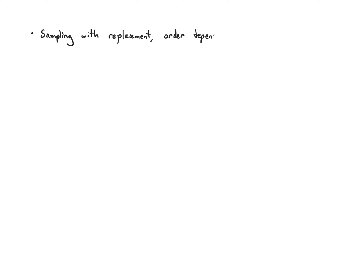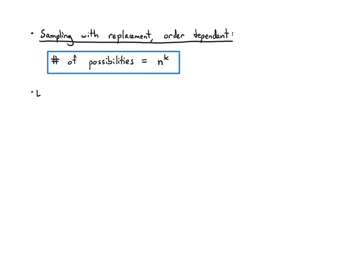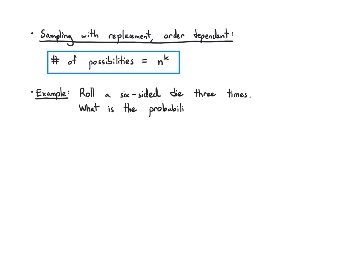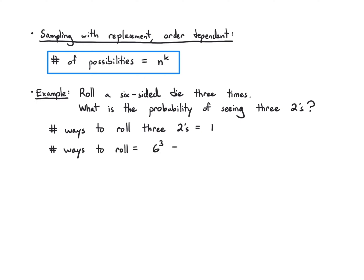For sampling with replacement, order dependent, this is the easiest case. The number of possibilities is just n to the k. If I have n things and need to make k choices, I get n to the k. As an example, if I roll a six-sided die three times and want to know the probability of seeing three twos in a row, there's just one way to roll three twos, and the total number of ways to roll is 6 to the 3, which is 216. So the probability of seeing two, then two, then two is 1 over 216.